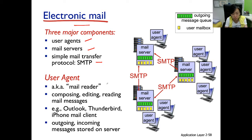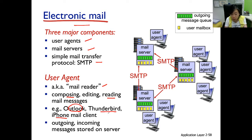The user agents are essentially the email readers. They allow us to write, edit, and read emails. Outlook from Microsoft is one well-known mail reader. Thunderbird, from Mozilla — the company that also produces the Firefox web browser — is another. The iPhone comes with a built-in mail reader, and Google is pushing for a Gmail mail reader. Keep in mind that the actual emails are all stored on the servers these days, not on the user agent.